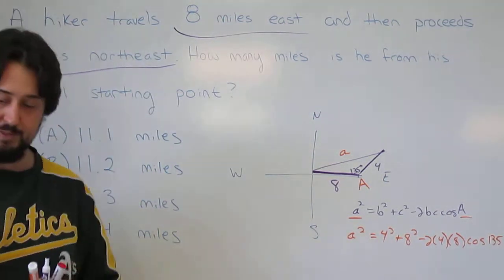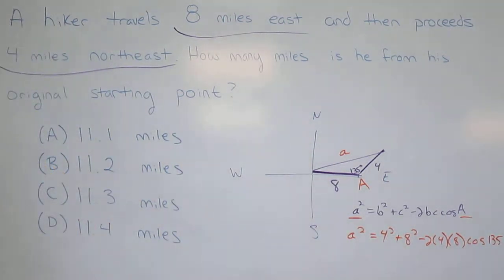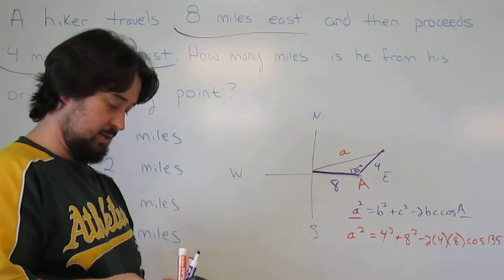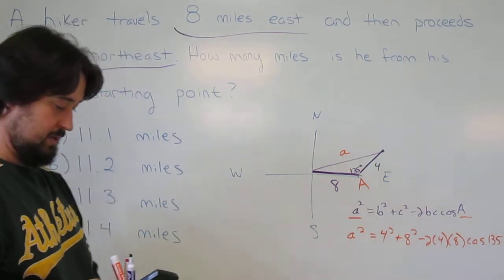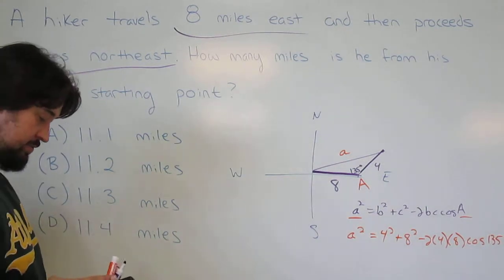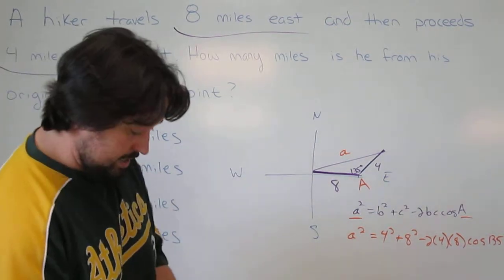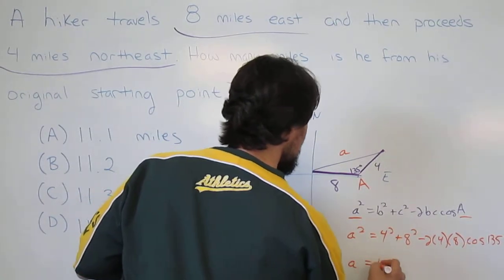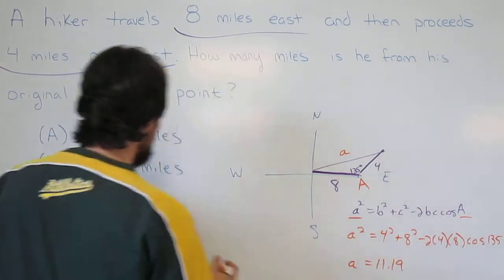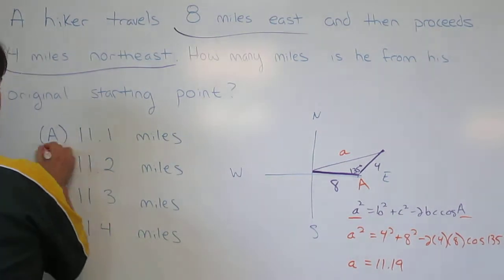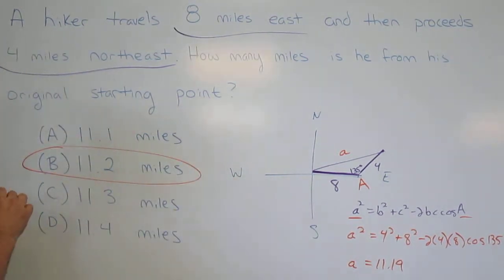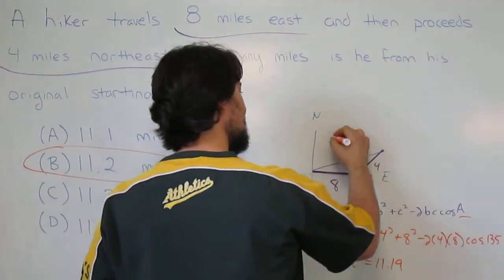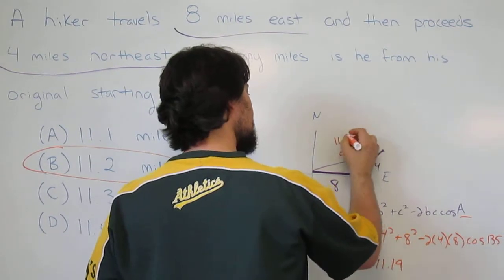We should be able to solve this out now using a calculator. The last step is the square root, and we're going to get 11.19, which rounds up to 11.2. So our answer is B — this person is 11.2 miles from their starting point.